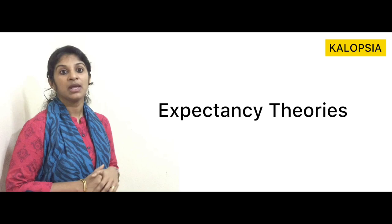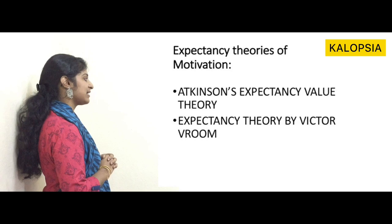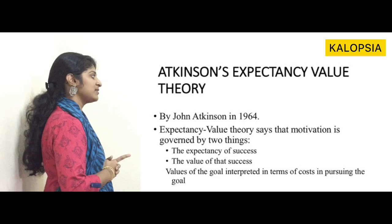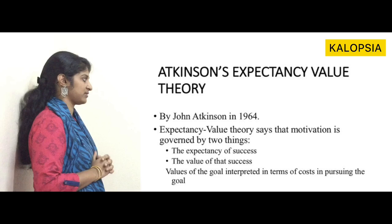Now let's look at expectancy theories of motivation, which also fall under cognitive theories. There are two theories: Atkinson's expectancy value theory and the expectancy theory by Victor Vroom. Atkinson's theory was proposed by John Atkinson in 1964. It says that motivation is governed by two things: the expectancy of success and the value of success.